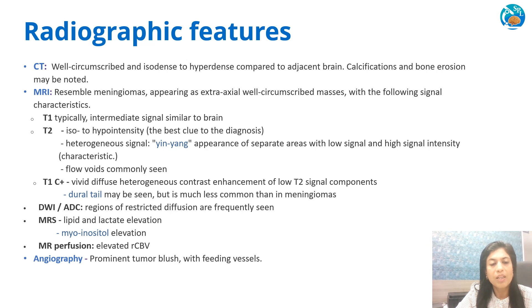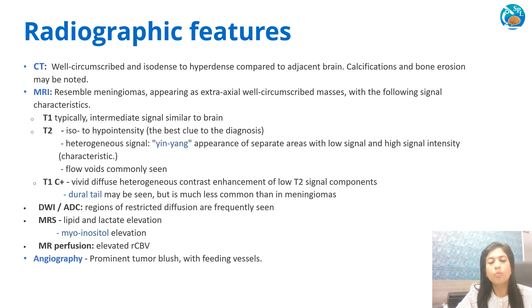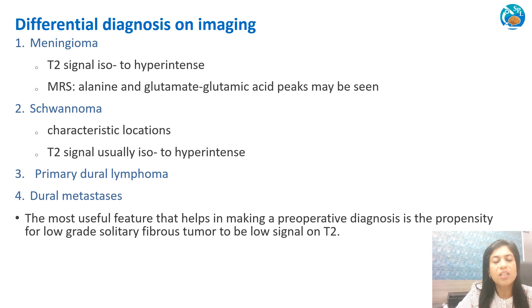On T1 they show intermediate signal similar to brain. On T2 they are iso- to hypo-intense and show heterogeneous signal — the yin-yang appearance of separate areas with low and high signal intensity, which is very characteristic. Angiography may also be performed. On imaging, the differential diagnoses include meningioma, schwannoma, primary dural lymphoma, and dural metastasis.